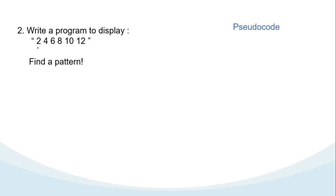If you pay attention, your job is to display a number six times. Look at the pattern: to display the first number I multiply 2 times 1, for the second number I multiply 2 times 2, for the third number I multiply 2 times 3, and so on. In pseudocode we start the initialization from 1. Since I want to display it six times, my stop condition will be x less than or equal to 6.